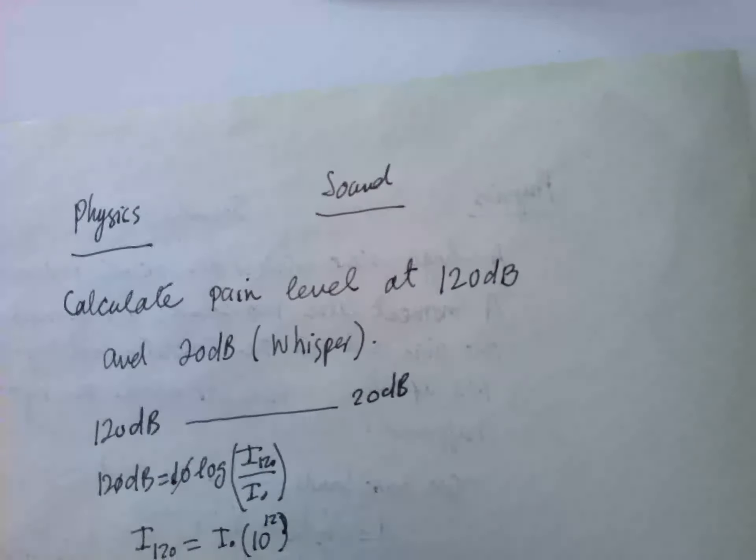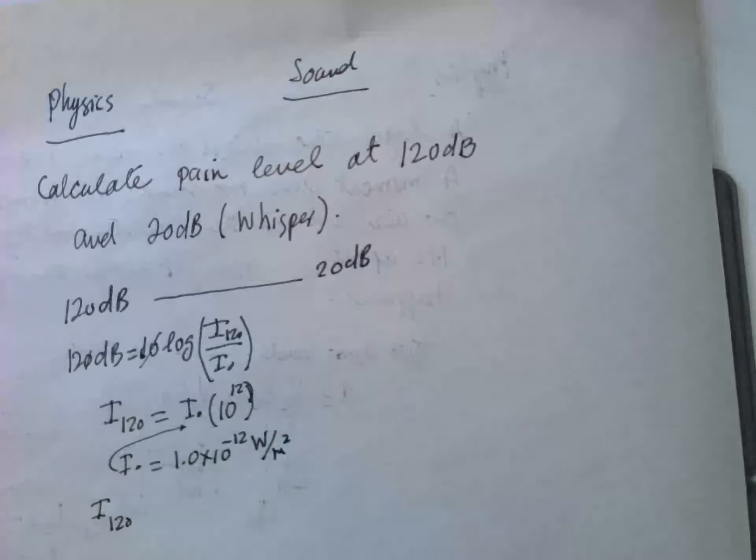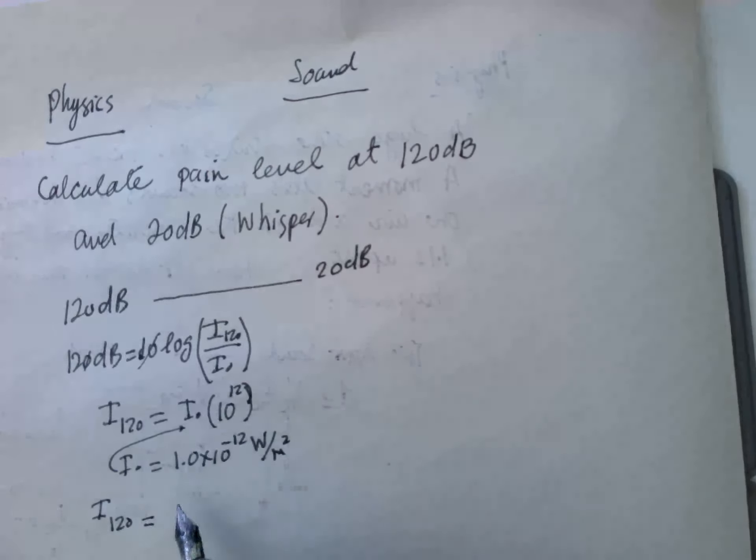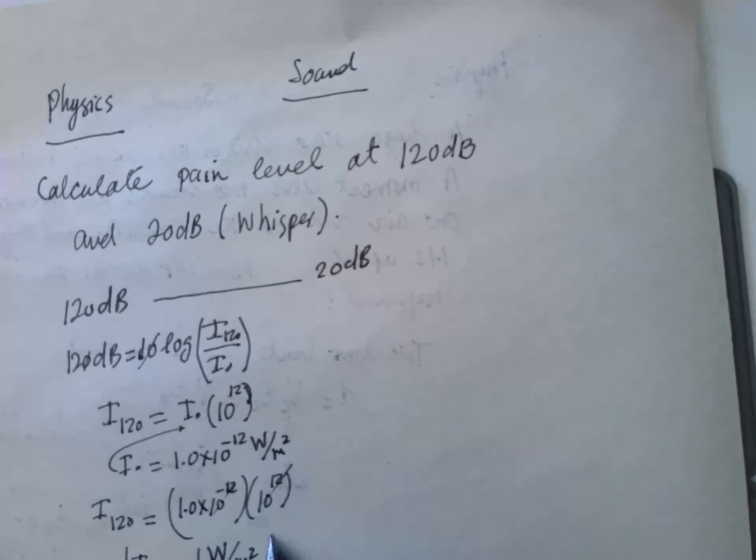So I₀ is equal to 1.0 into 10 to the power minus 12 watts per meter square. This is the intensity. So if we substitute this value here, I₁₂₀ is equal to 1.0 into 10 to the power minus 12, multiplied by 10 to the power 12. So this cancel, this is equal to 1 watt per meter squared. This is the intensity of energy from the sound wave of 120 dB.